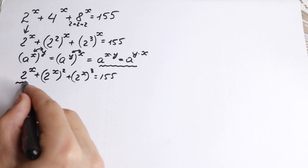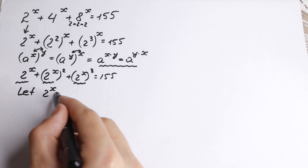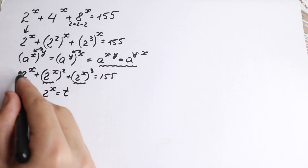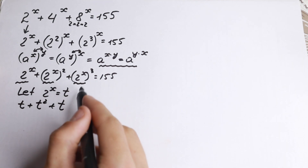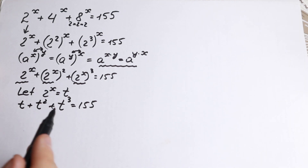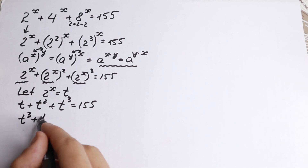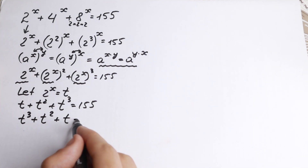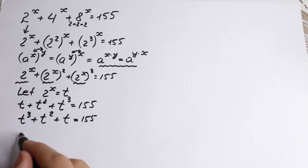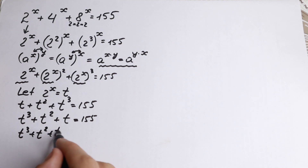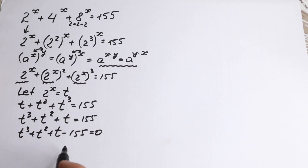We can see that we have three instances of the same element, 2 to the x. So it's natural to use a substitution: let t equal 2 to the x. Our equation then becomes t plus t squared plus t cubed equals 155. Reordering, we get t cubed plus t squared plus t equals 155, and bringing the constant to the left gives us t cubed plus t squared plus t minus 155 equals zero.